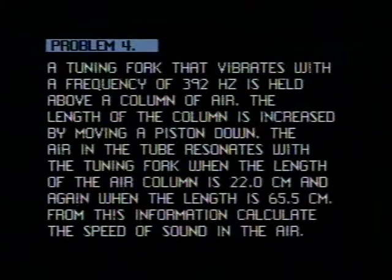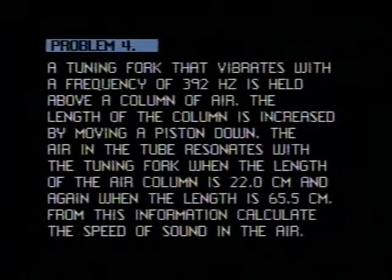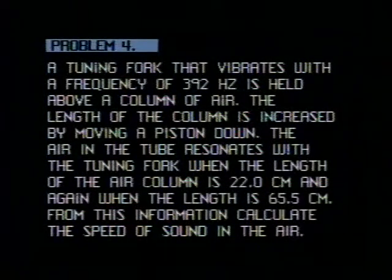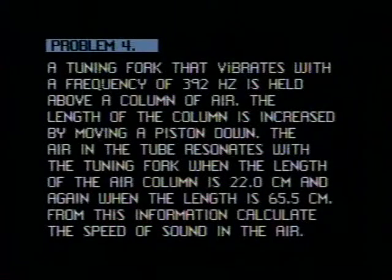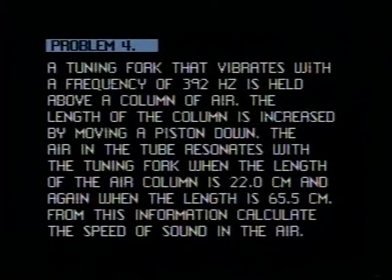Problem number four reads: A tuning fork that vibrates with a frequency of 392 hertz is held above a column of air. The length of the column is increased by moving a piston down. The air in the tube resonates with the tuning fork when the length of the air column is 22 centimeters and again when the length is 65.5 centimeters. From this information, calculate the speed of sound in the air.